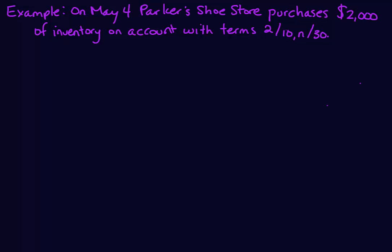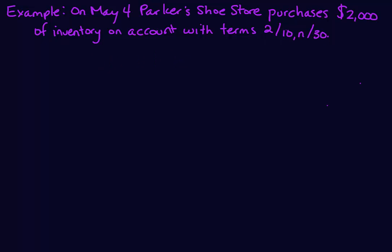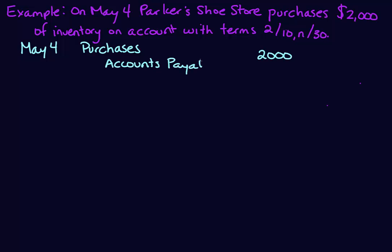Continuing with our example: on May 4th, Parker's Shoe Store purchases $2,000 of inventory on account with terms 2/10, n/30. These are discount terms, meaning they get a 2% discount if they pay within 10 days, but the full amount is due within 30 days. When we make the purchase we don't worry about the discount — we record the full amount. It's when we actually pay that we assess whether we're within the discount period and can lower our cash payment to the supplier.